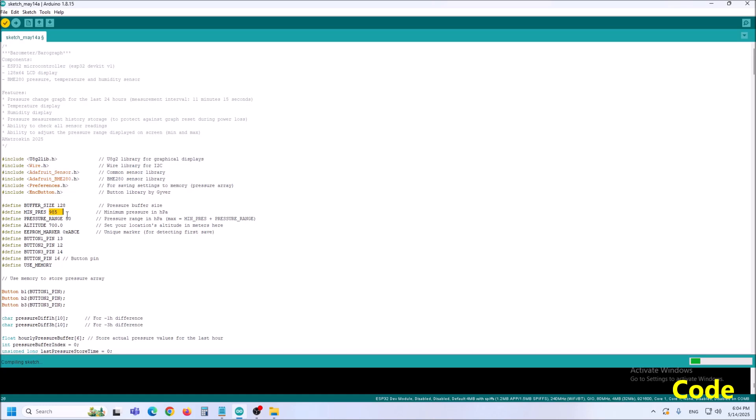Next instead of absolute atmospheric pressure, the relative atmospheric pressure is now calculated based on the altitude at which the device is located and which we need to enter in this line of the code, in my case 700 meters.